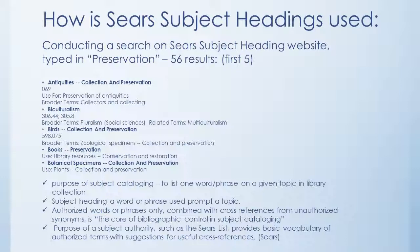So, how are the Sears subject headings used? While conducting a simple word search on the Sears website using the word Preservation, 56 results popped up. By showcasing the first five listed, what is shown are the main topics listed for the word Preservation, listed in alphabetical order. Sears explains that its purpose is to list the word or phrase by the given topic in that collection. Whatever the authorized word or phrase combined with the cross-reference word forms a core base for controlled subject headings. The Sears list provides a basic vocabulary of terms with suggestions for cross-references that are more useful.